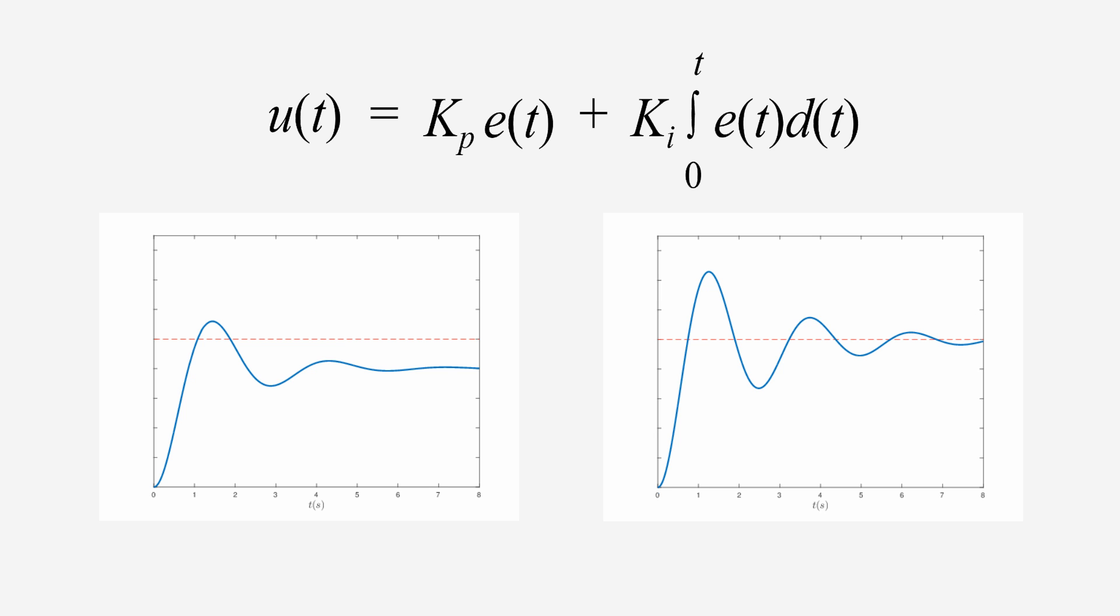Think about it. Because the integral term is an accumulation of the past error, on the initial jump up to the set point, the integral term is accumulating the positive error and giving a greater and greater contribution to the output. Then, when the system overshoots, the accumulation of this negative error cancels out some of the earlier accumulated positive error, decreasing the contribution of the integral term to the output. This happens over and over again until the system eventually settles on the set point.